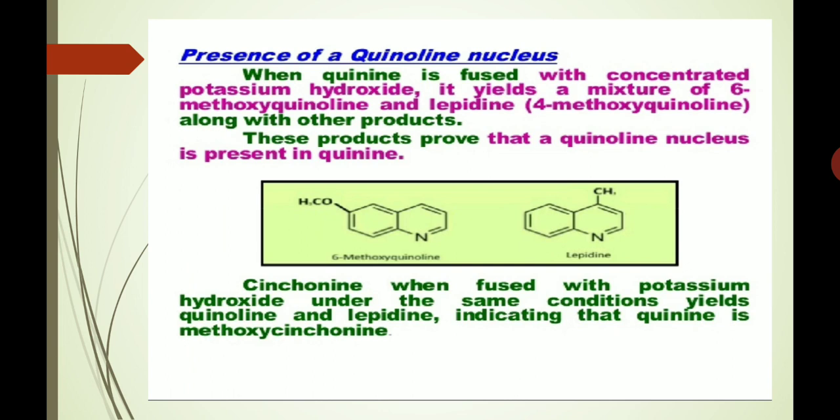Presence of a quinoline nucleus: when quinine is fused with concentrated potassium hydroxide, it yields a mixture of 6-methoxyquinoline and lepidine. Lepidine is 4-methylquinoline, along with other products. These products prove that a quinoline nucleus is present in quinine. Cinchonine, when fused with potassium hydroxide under the same conditions, yields quinoline and lepidine, indicating that quinine is methoxy-cinchonine.